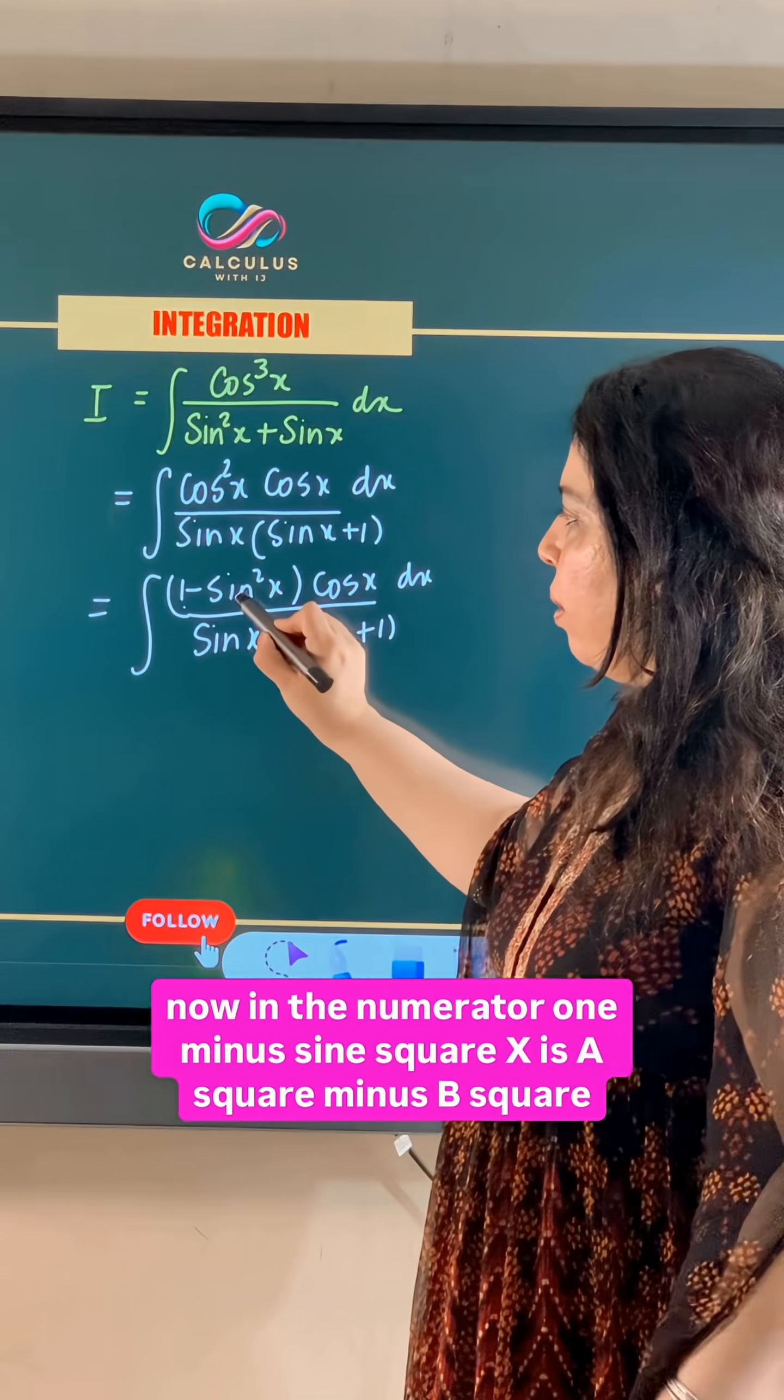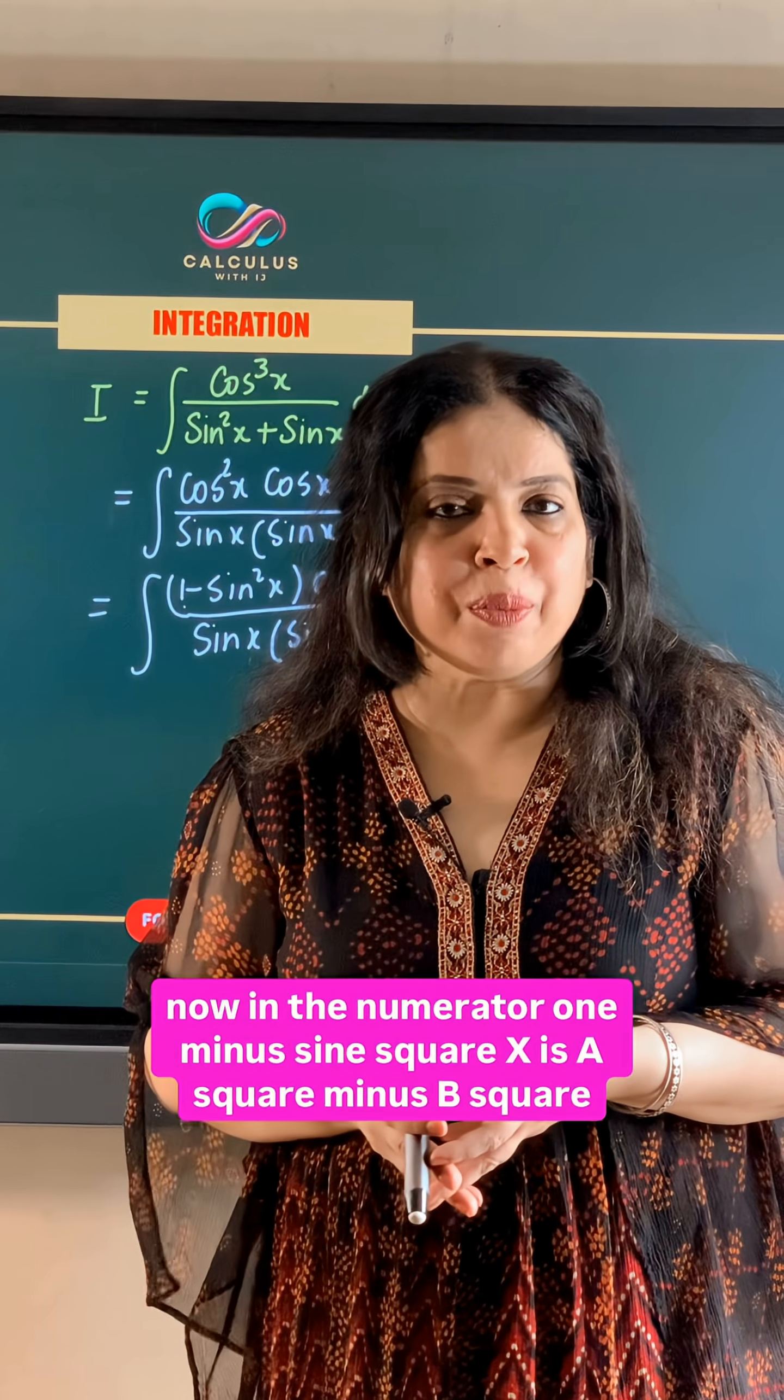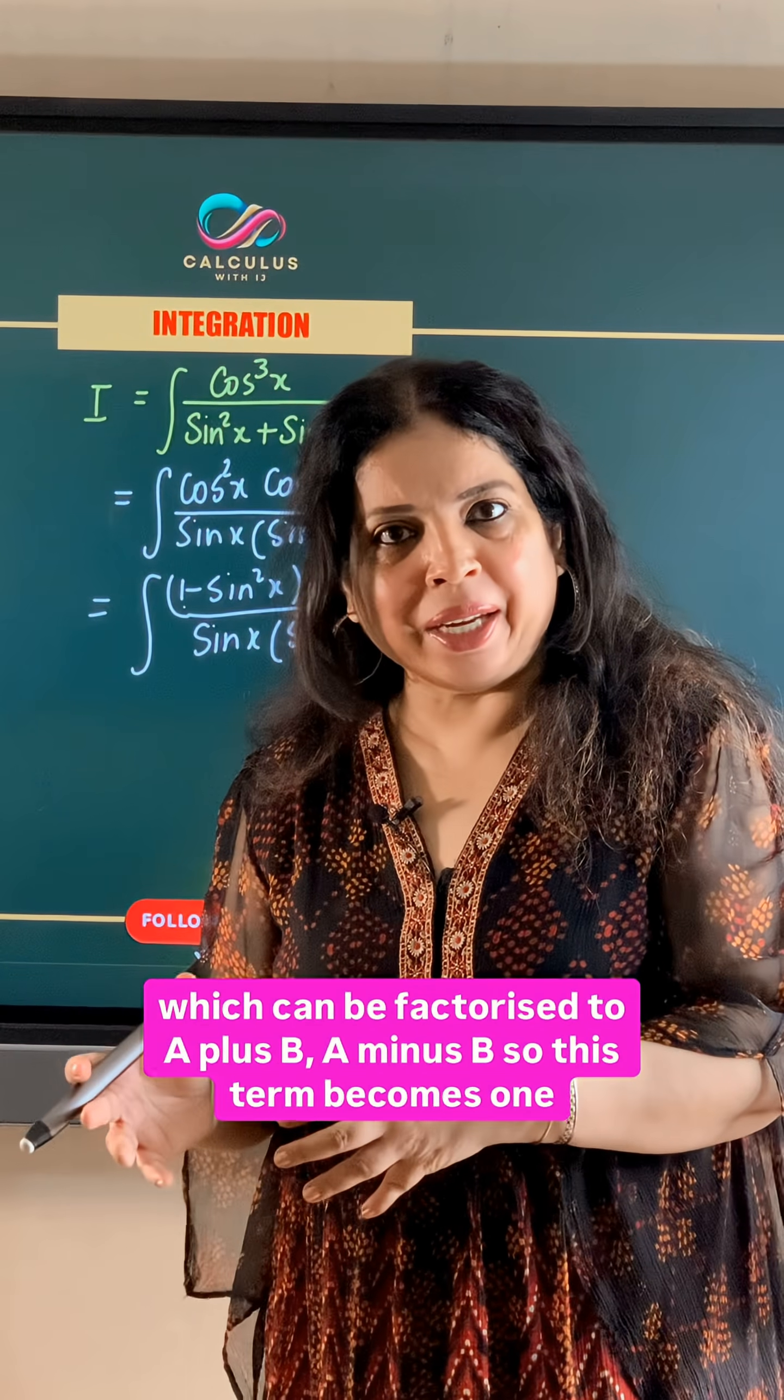Now in the numerator, 1 minus sin square x is a square minus b square, which can be factorized to a plus b, a minus b.